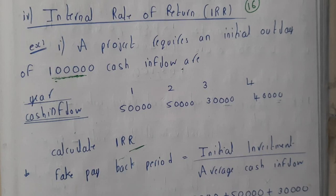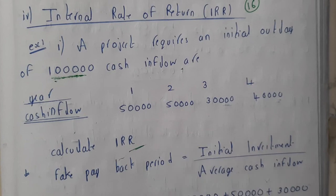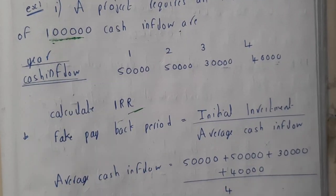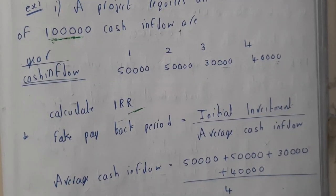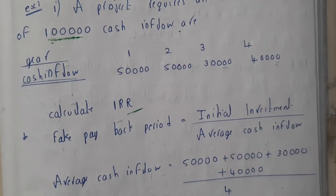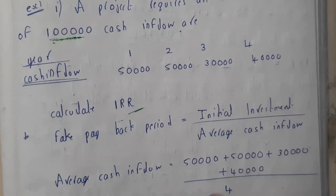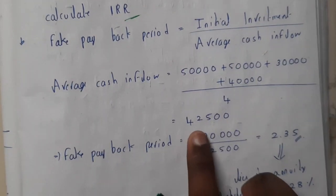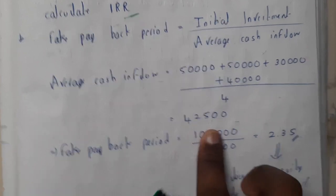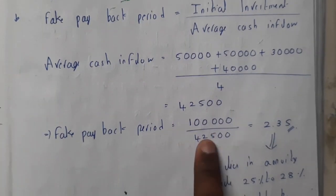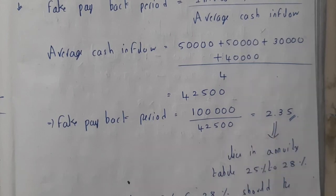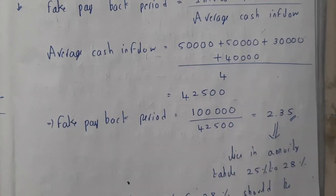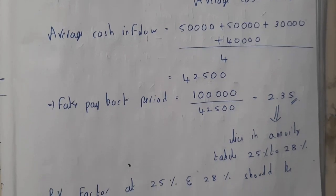Before calculating IRR, we need to do two to three steps. The first step is calculating the fake payback period, which is initial investment divided by average cash inflow. The average cash inflow is (50,000 + 50,000 + 30,000 + 40,000) / 4 = 42,500. So the fake payback period is 1,00,000 / 42,500 = 2.35.